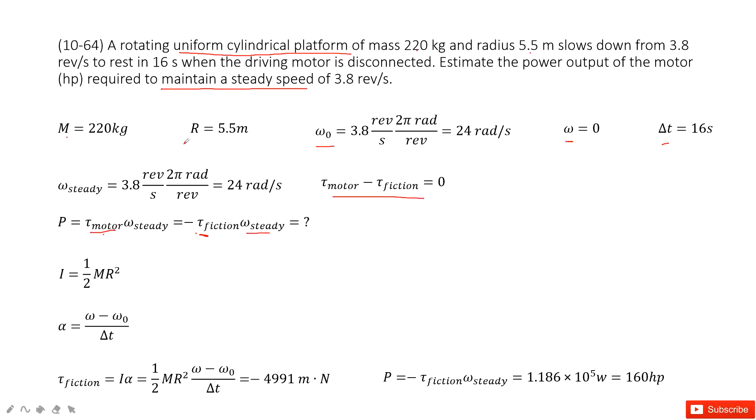Because there, from the mass and the radius, we get the momentum of inertia. The next one, from initial angular velocity and the final angular velocity and time, we can find the alpha, angular acceleration. And then, the torque for the friction, just I times alpha. Agree?